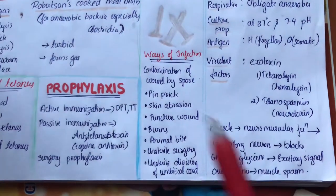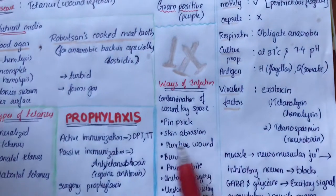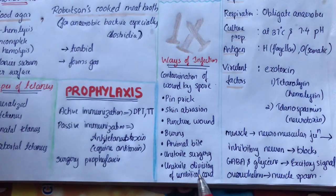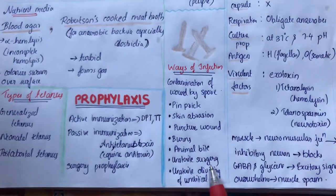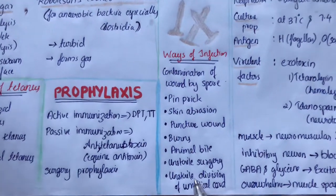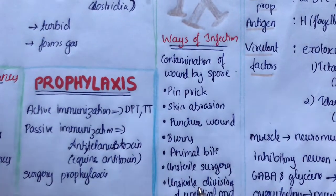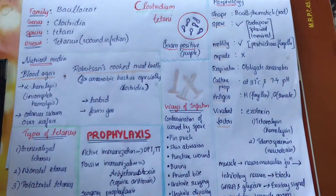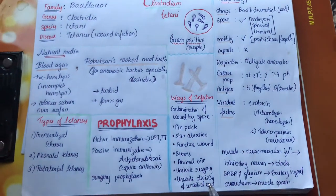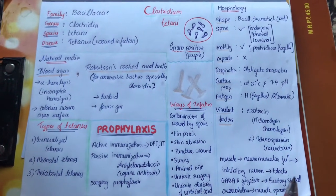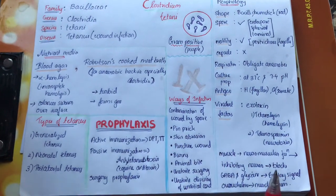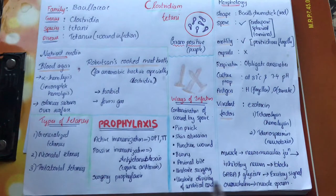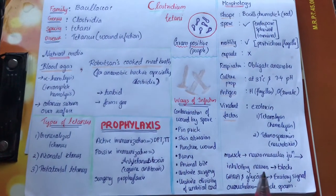Let us see which cases can cause the disease: pinpricks, skin abrasions, puncture wounds, bones, animal bites, unsterile surgery, and unsterile division of the umbilical cord. We have to concentrate on these last two points. In rural areas and developing countries, delivery of a baby and abortions take place at home. They use instruments which are mostly unsterile, so there is a chance for those instruments to be contaminated with spores. If contaminated, the infant or the woman can get tetanus.